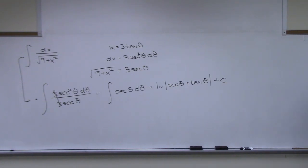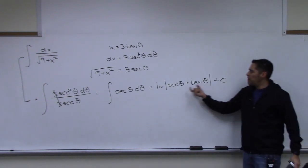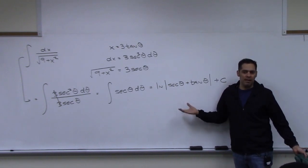The antiderivative of sec theta is natural log of |sec theta + tan theta| + C — the formula someone worked their whole life to figure out, and now we get to use it.